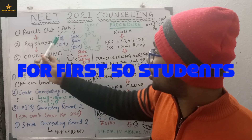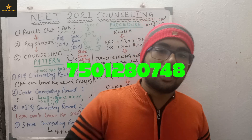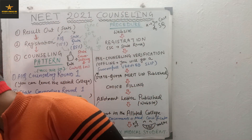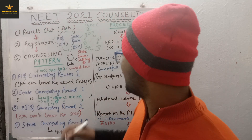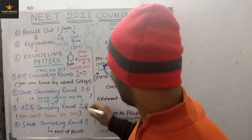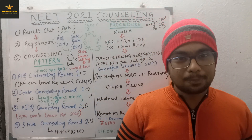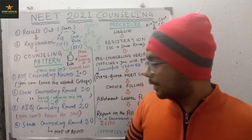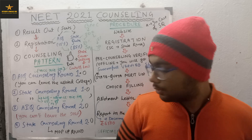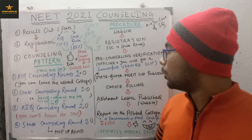Registration is done. After registration, your counselling starts. The counselling pattern is: All India Quota (AIQ) counselling Round 1.0, then State counselling Round 1.0, then AIQ counselling Round 2.0, and finally State counselling Round 2.0. Let's understand what happens and what doesn't happen. First, register on mcc.nic.in — registration done — now counselling starts.